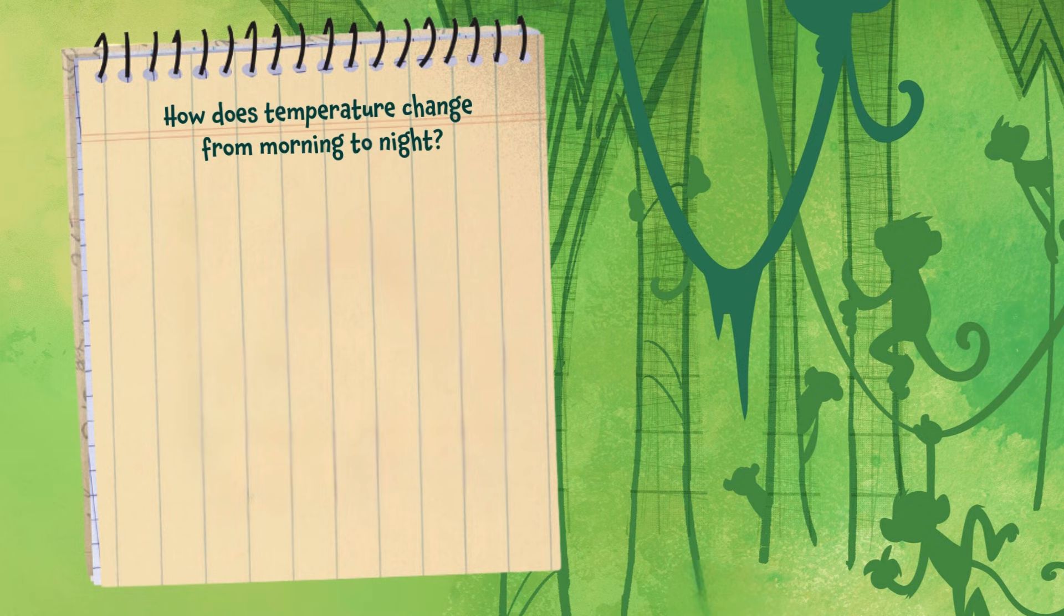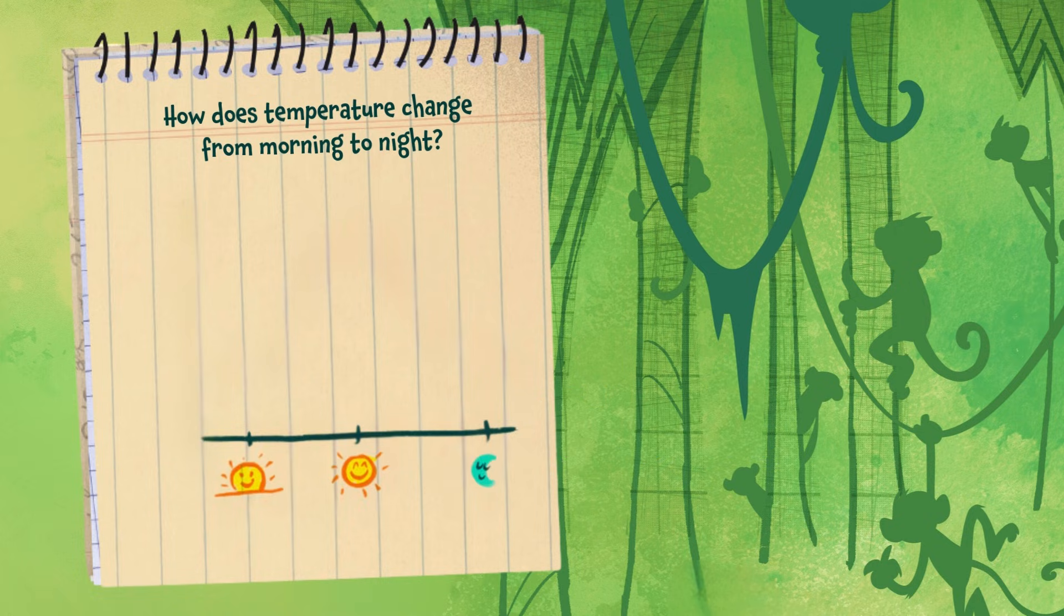First, I drew a horizontal line for the x-axis. That shows time, morning, midday, and evening.